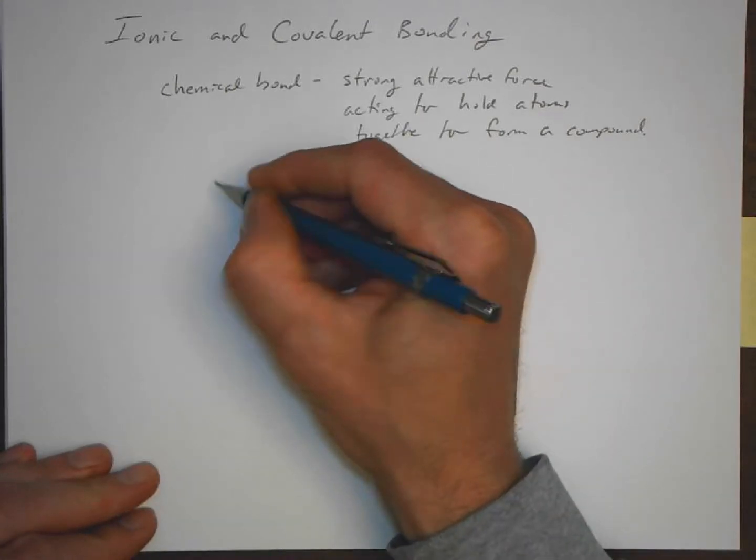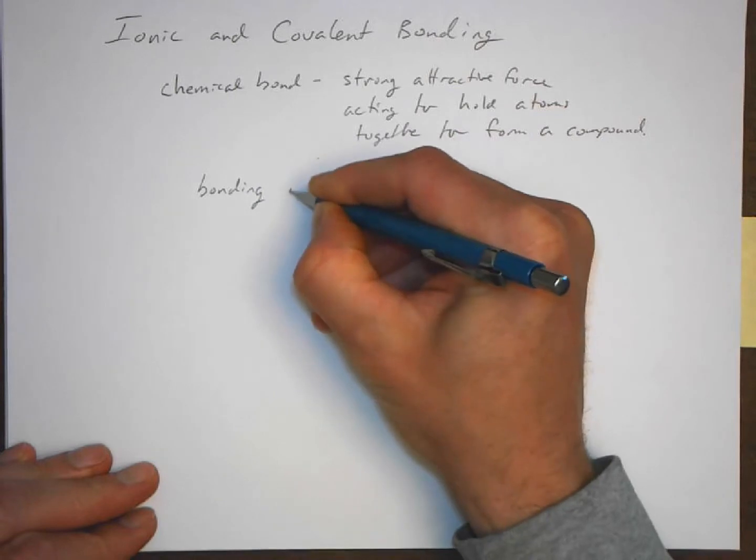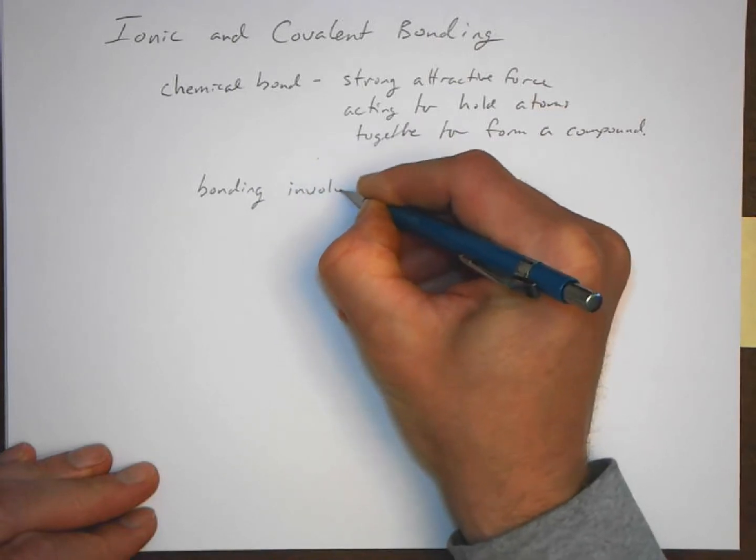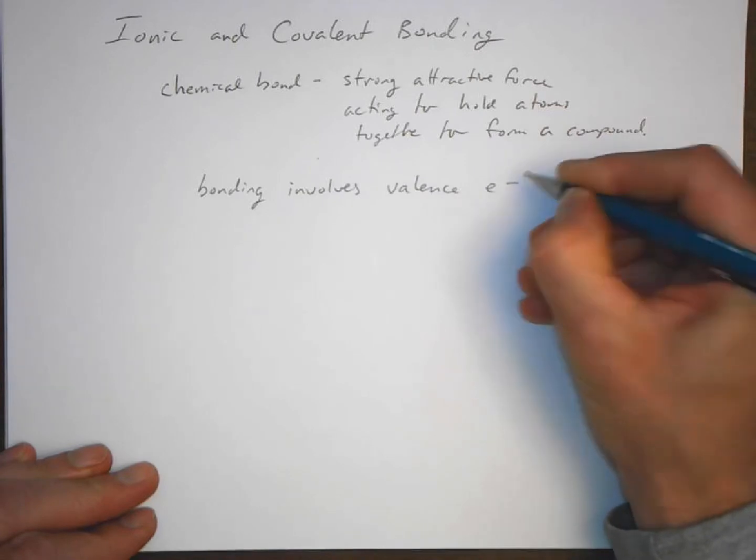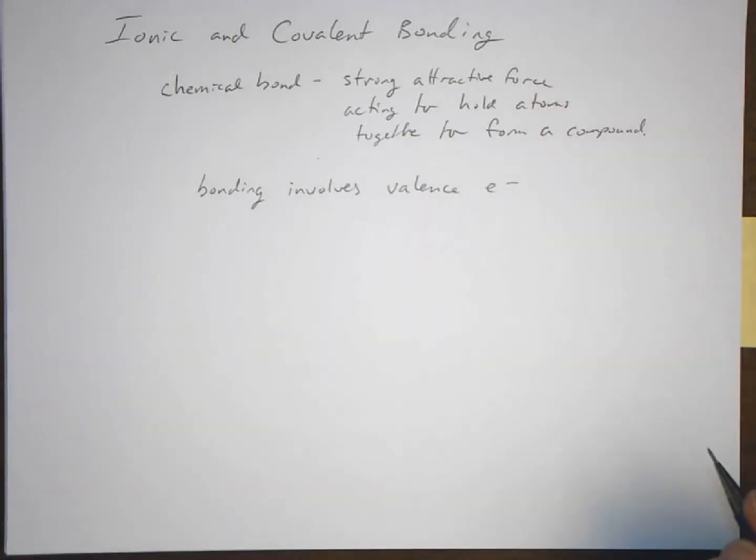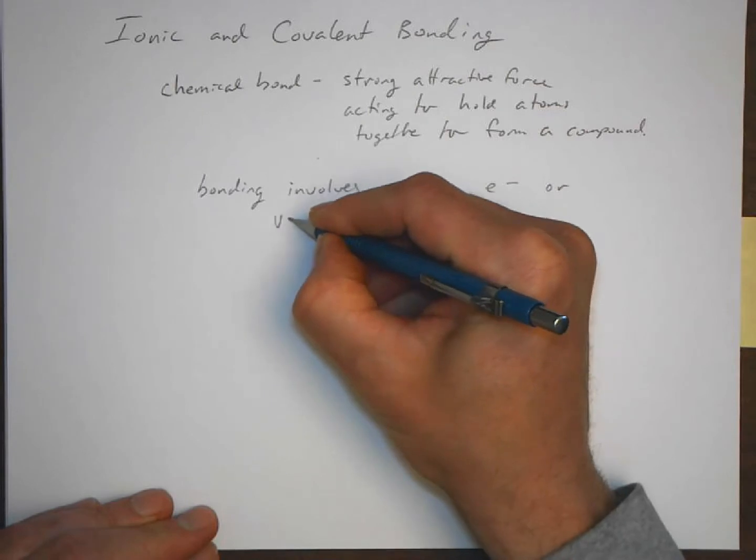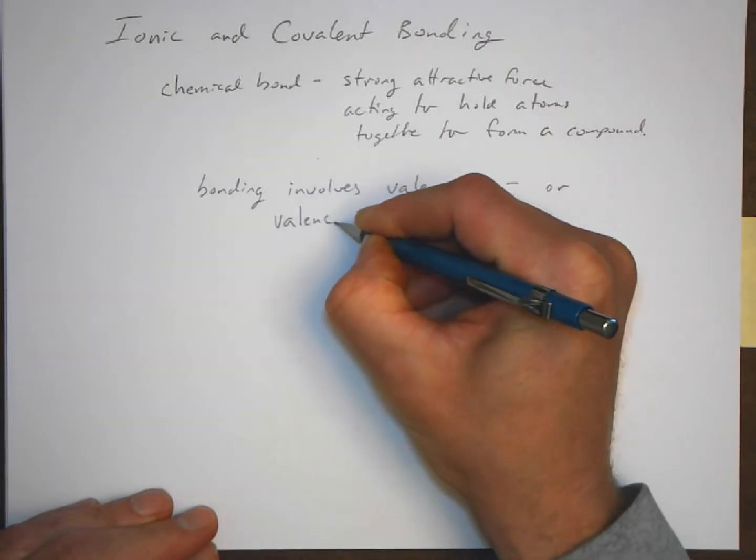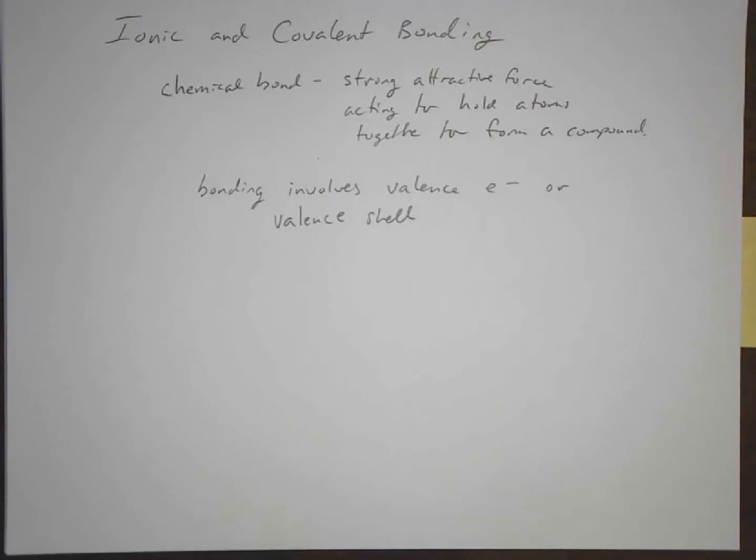Chemical bonding involves valence electrons, or another way to put it, the valence shell. What it means is that chemical bonding happens with the valence electrons only. The core electrons are not involved in chemical bonding.